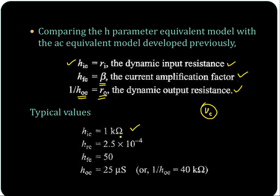And you see HFE is 50, that is beta — you can have 50 or any values. Then HRE has a factor of 10 raised to minus 4, which means it can be neglected.